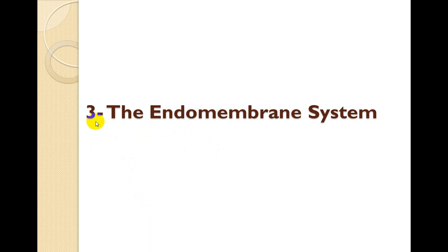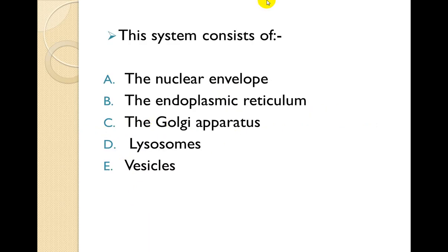The third cytoplasmic component is the endomembrane system. هذا هو الجهاز الغشائي الداخلي. This system consists of: first, the nuclear envelope (الغلاف النووي), the endoplasmic reticula (الشبكة البلازمية الداخلية), the Golgi apparatus (جهاز كولجي), lysosomes (الجسيمات الحالة), and vesicles (الحواصلات).